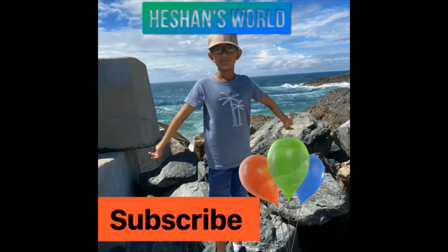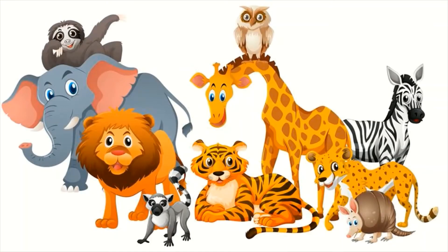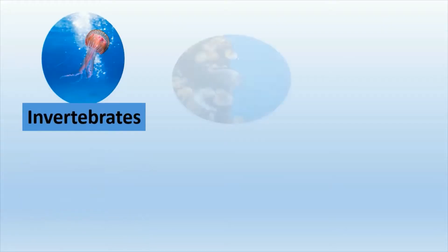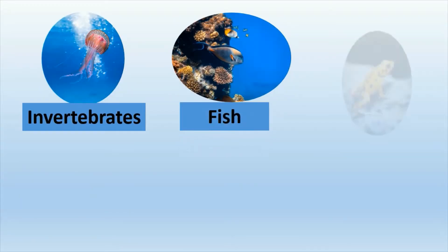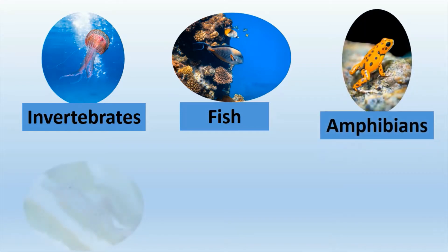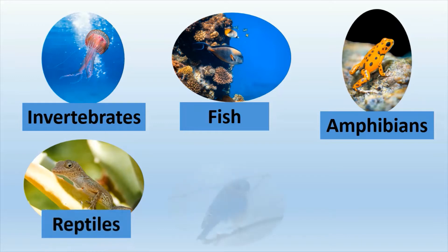Hi friends, today I'm going to talk about what are the six basic animals. Let's see what are the six basic animals. There are invertebrates, fish, amphibians, reptiles, birds and mammals.